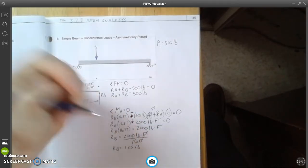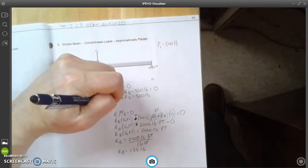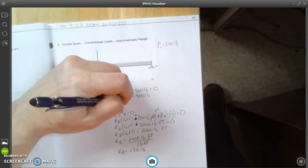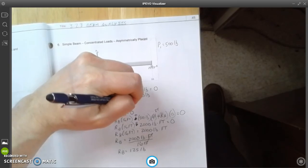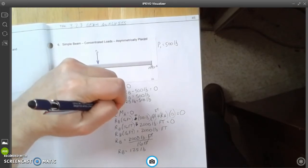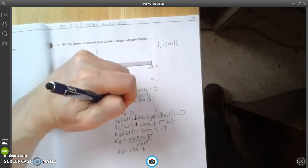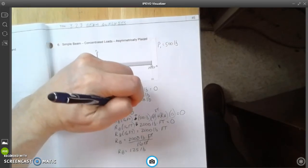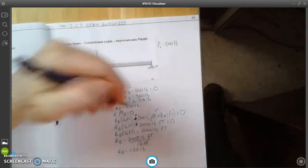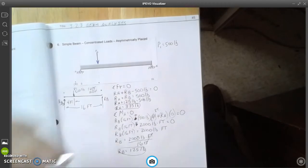So now we can come up here and take Ra plus 125 pounds equals 500 pounds. So in the end, Ra, and we're going to subtract 125 from each side, is going to be equal to 375 pounds. So we'll give that a circle. And of course we'll circle Rb down here.